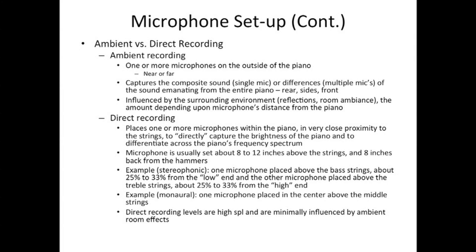In the case of direct recording, you place one or more microphones within the piano in very close proximity to the strings to directly capture the brightness of the piano and to differentiate across the piano's frequency spectrum. The microphone is usually set about 8 to 12 inches above the strings and 8 inches back from the hammers. For stereophonic, one microphone is placed above the bass strings and the other above the treble strings. For monaural, you might place the microphone in the center above the middle strings. Direct recording levels are high SPL and are minimally influenced by ambient room effects.